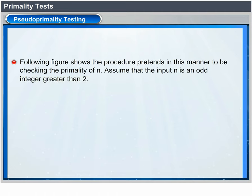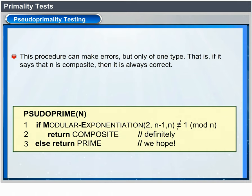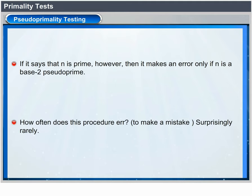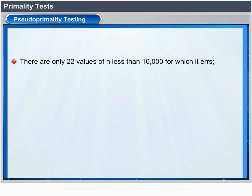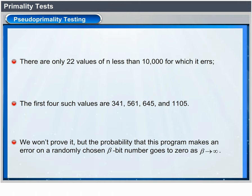Test whether N satisfies a^(n-1) ≡ 1 mod n for a = 2. If not, declare N composite. Otherwise, return prime — guessing that N is prime when in fact all we know is that it is either prime or a base-2 pseudo-prime. This procedure can make errors only of one type: if it says composite, it is always correct. Errors occur only when N is a base-2 pseudo-prime. There are only 22 values of N less than 10,000 for which it errors; the first four are 341, 561, 645, and 1105. The probability that this program makes an error on a randomly chosen β-bit number goes to 0 as β → ∞.